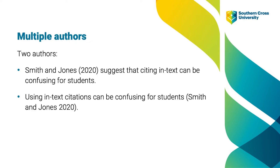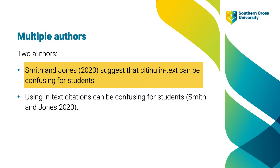Now let's have a look at how to cite multiple authors in text. When a work has two authors, the names are cited in the order in which they appear in the reference. The first example shows how to reference a paraphrase with two authors using an author-focused style. This sentence starts with the author names Smith and Jones and the year in round brackets. Notice that the word 'and' is used between the author names instead of the ampersand symbol, then the reporting verb and then the paraphrase.